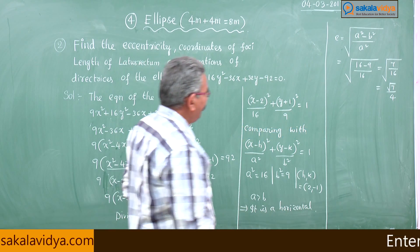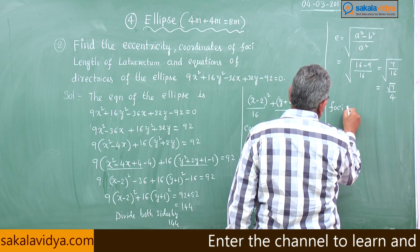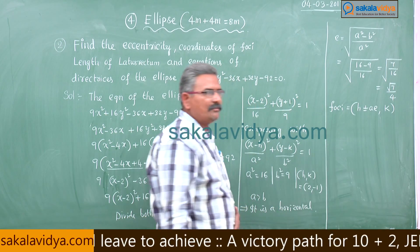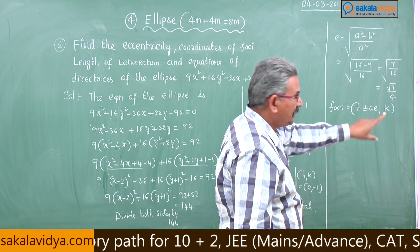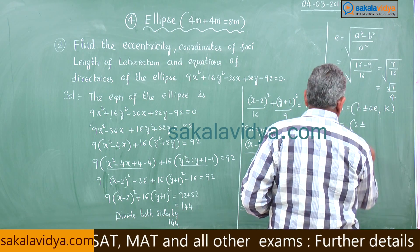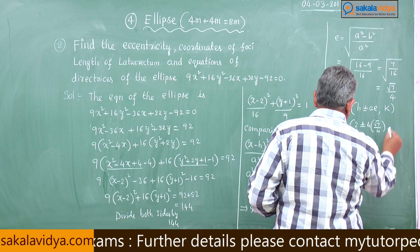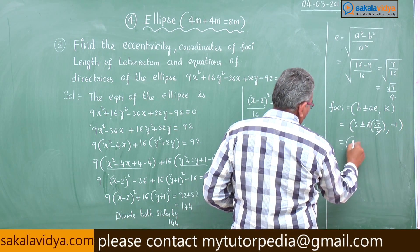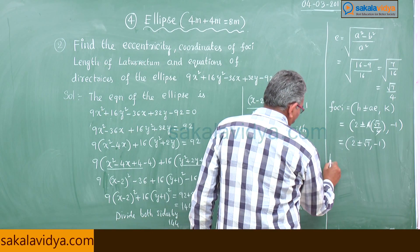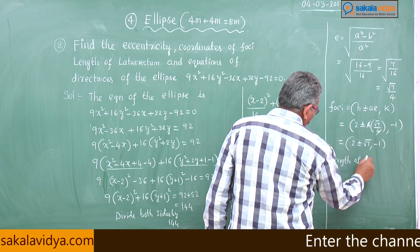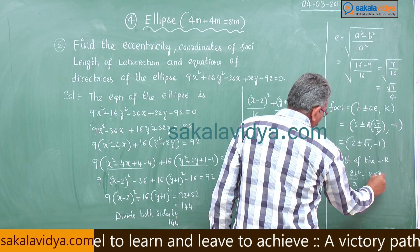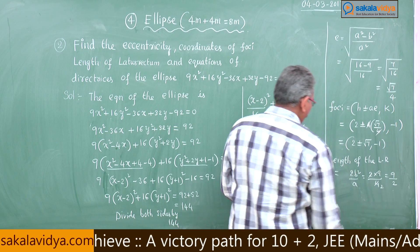The foci are at (h ± ae, k). For the standard form it's (±ae, 0); for this ellipse it becomes (2 ± 4·(√7/4), -1) = (2 ± √7, -1). These are the foci coordinates. The length of the latus rectum is 2b²/a = 2×9/4 = 9/2 units.